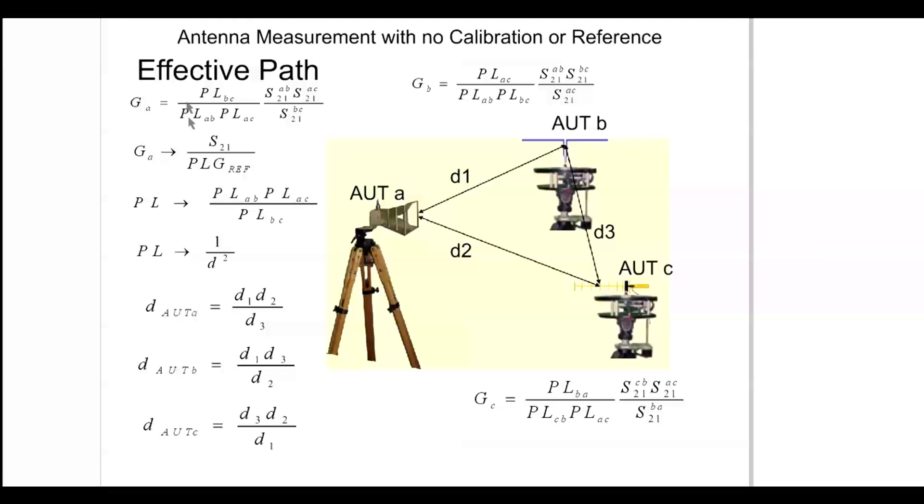In this case the measurement would be S21 AB times S21 AC divided by S21 BC. The effect of path loss is from A to B times the path loss of A to C divided by the path loss from B to C.